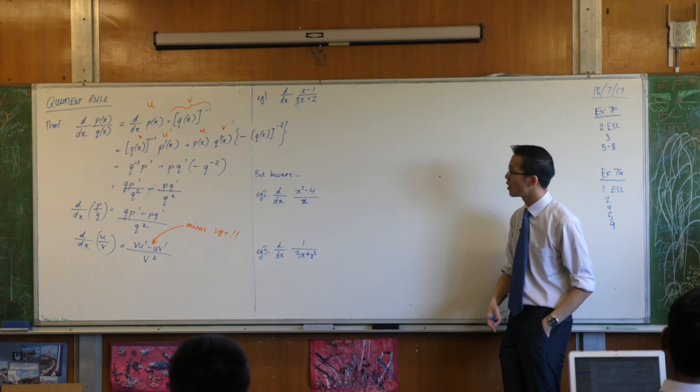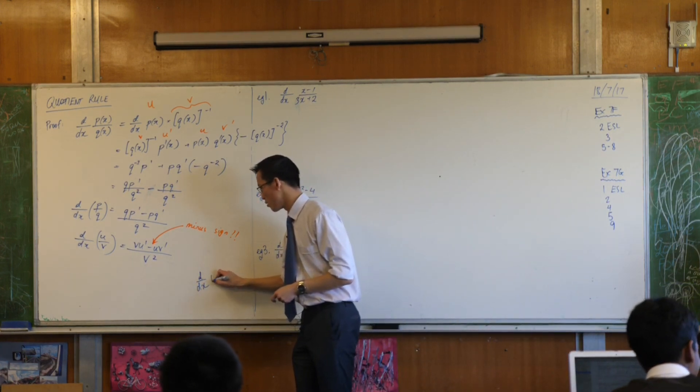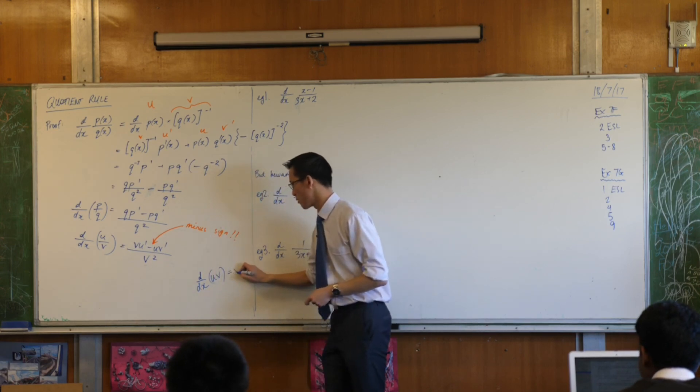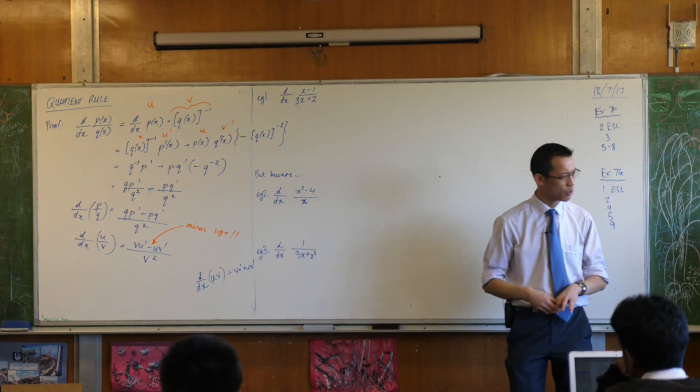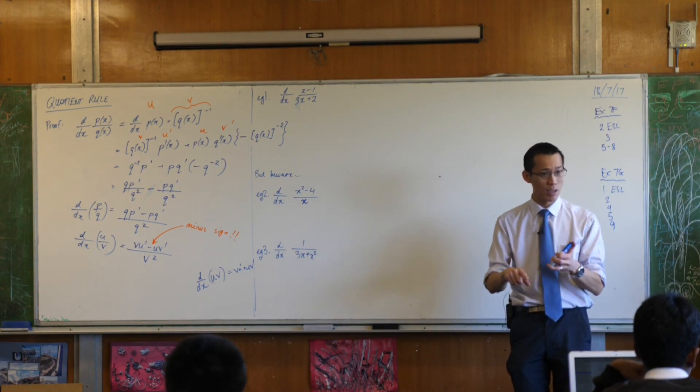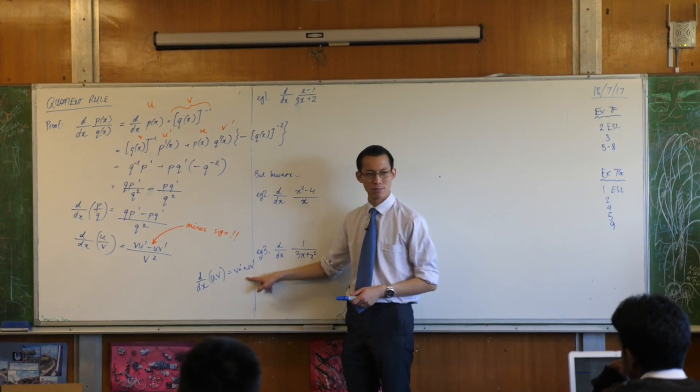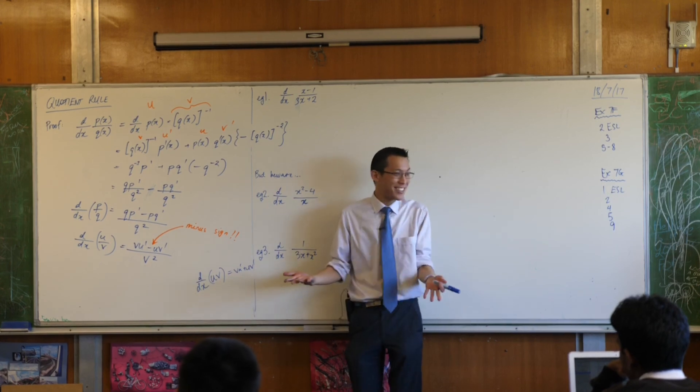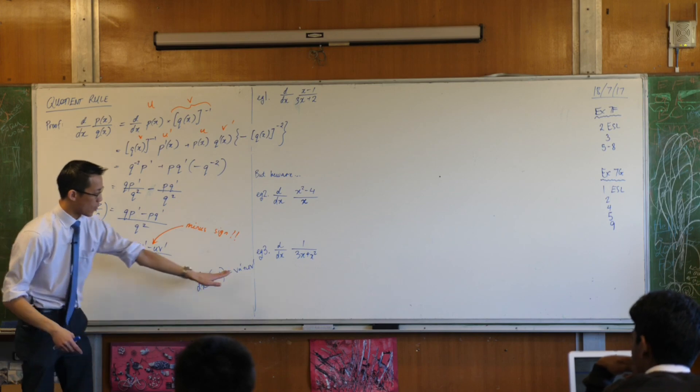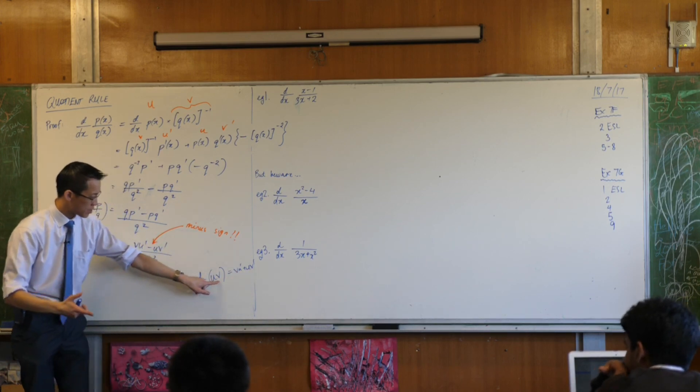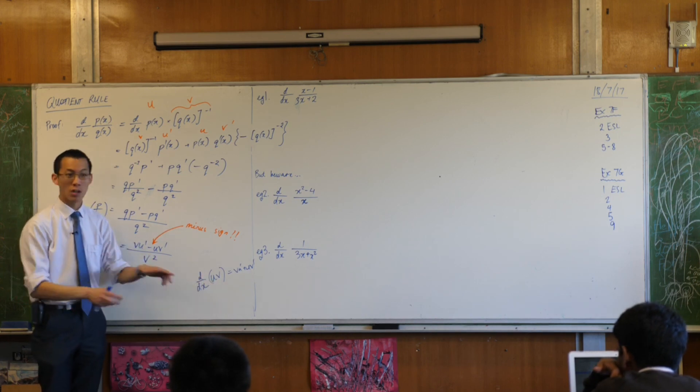One more thing to point out for you. The product rule gives you this: u, v, v, u dash, u, v dash. Have you already noticed? It doesn't matter which one u or v is, does it? You could interchange them. You would get the same thing. Instead of vuv, you'd get uvv, right? But you'll get exactly the same thing. You're adding it, and an addition could be done either way. And the reason for that, the reason why the product rule is symmetrical in that way, is because products are symmetrical. u times v is the same as v times u, so no difference.